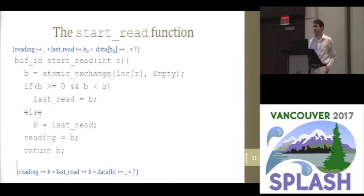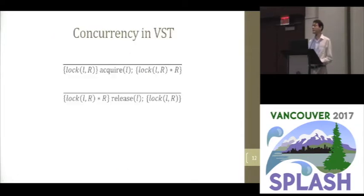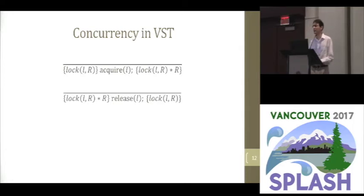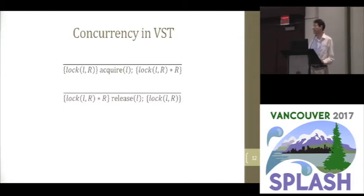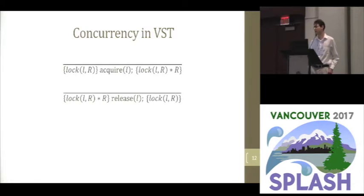To talk about how we reason about atomic exchange in VST, I'll need to start by talking about the concurrent separation logic that VST uses. This is a pretty standard concurrent separation logic with locks. We have a predicate which says that L is a memory location that's a lock with resource invariant R, where R is an arbitrary separation logic formula describing the resources held by the lock. When a program does a lock acquire operation, it gets access to the resources held by the lock and can read and modify them arbitrarily, as long as by the time it calls the release operation it's re-established that invariant R, and after releasing the lock it no longer has access to it.